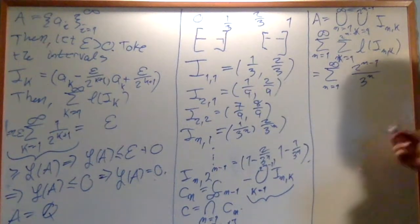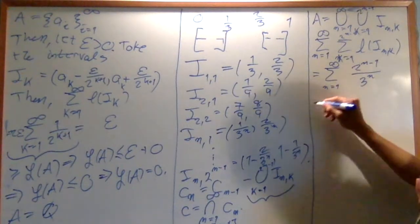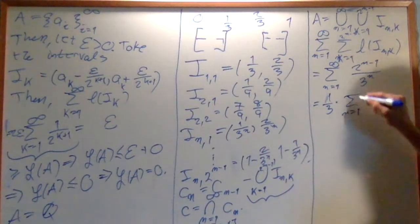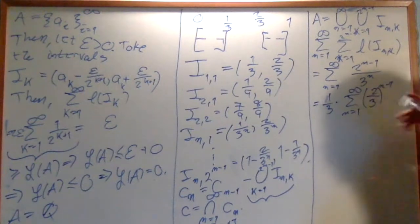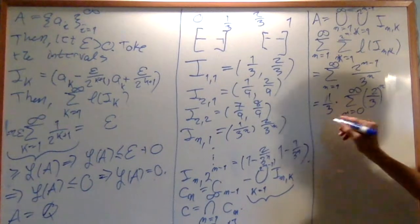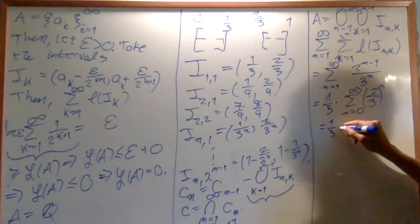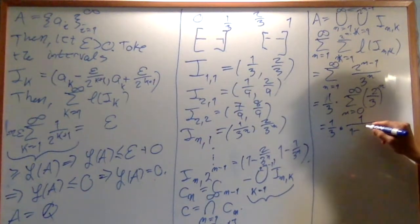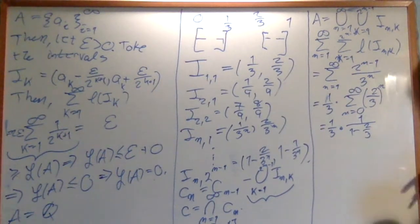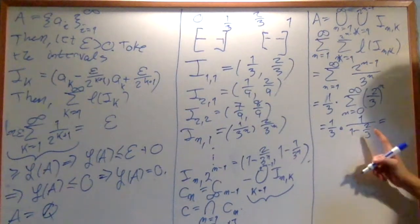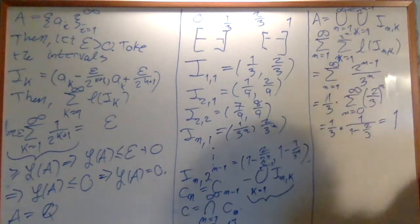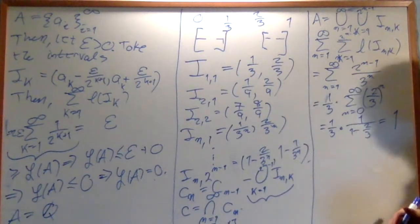This sum has an easy computation: it equals 1/3 times the sum from n=1 to infinity of (2/3)^(n−1), which is the sum from n=0 to infinity of (2/3)^n. Plugging into the geometric series formula gives 1/3 times 1/(1 − 2/3) = 1/3 times 3 = 1. So the sum of the lengths of all removed intervals is 1.